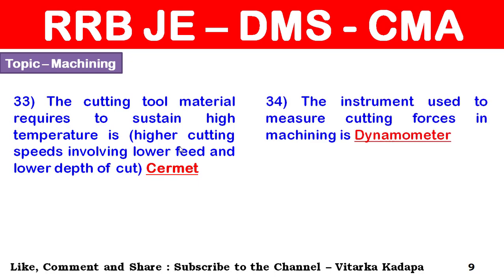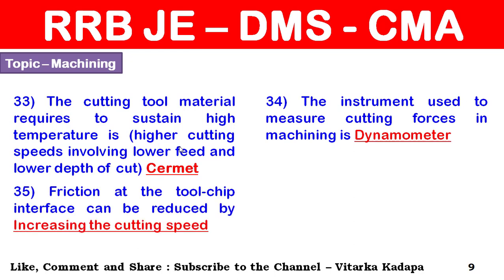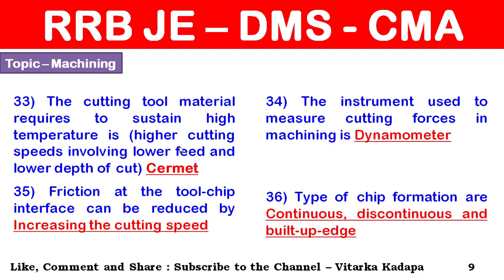The instrument used to measure cutting forces in machining is the dynamometer. Friction at the tool-chip interface can be reduced by increasing the cutting speed. Types of chip formations are: continuous chips, most commonly formed for ductile materials, and built-up edge chips.